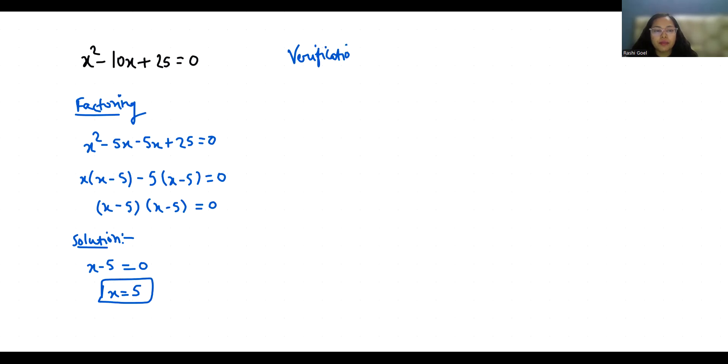For x² - 10x + 25 = 0, the quadratic formula is x = (-b ± √(b² - 4ac))/2a. So x = -(-10) ± √((-10)² - 4ac)/2a, because a = 1, b = -10.